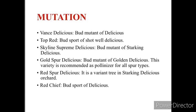Mutation is defined as sudden changes in DNA sequence. There are many mutations documented in apple. Vance Delicious is a bud mutant of Delicious; Top Red is a bud sport of Shortwell Delicious; Skyline Supreme Delicious is a bud mutant of Starking Delicious; Golden Spur Delicious is a bud mutant of Golden Delicious and is recommended as a pollinizer for all types of spurs; Red Spur Delicious is a variant tree in Starking Delicious orchard; and Red Chief is a bud sport of Delicious.